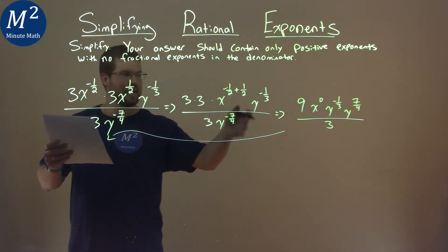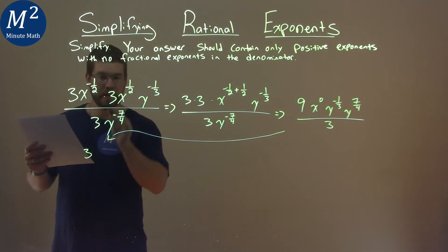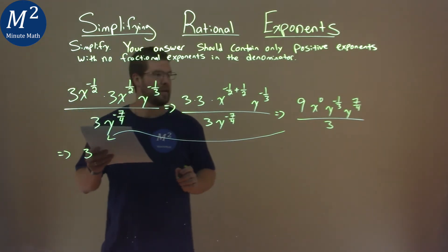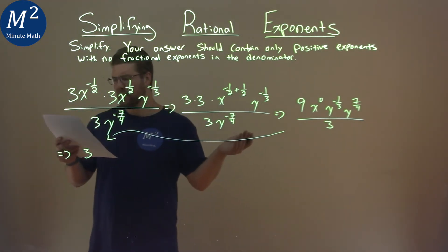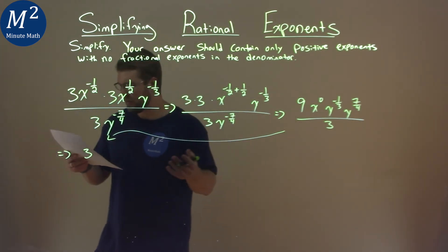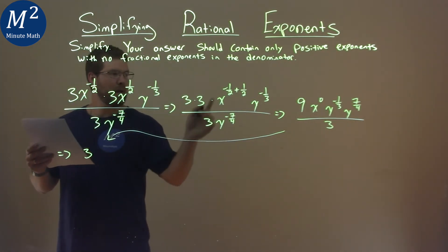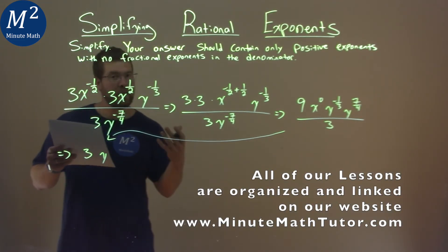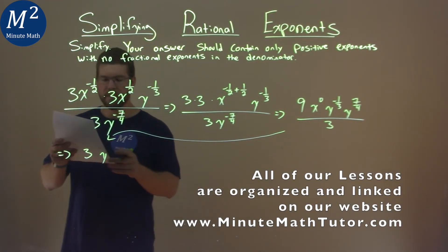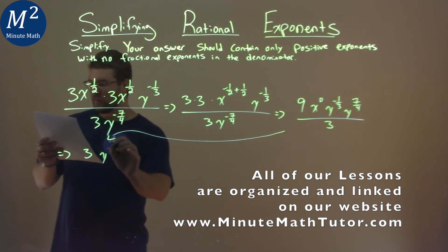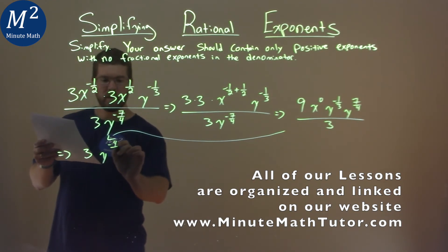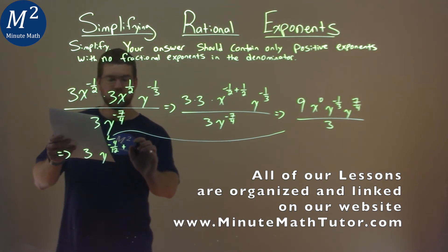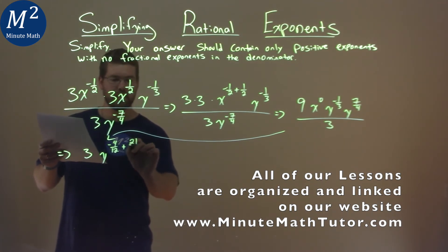9 divided by 3 is just a 3, and we no longer need a denominator here. Then we have x to the zero power — it's just 1, don't even write that anymore — and now we have y to the negative one-third power and seven-fourths. But we have to add the fractions; let's find a common denominator, and then negative one-third is the same as negative four-twelfths, and we're adding that to a positive twenty-one-twelfths.